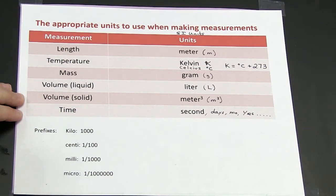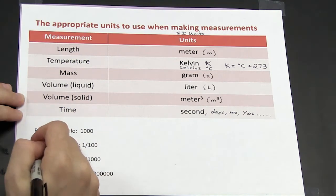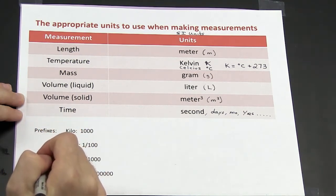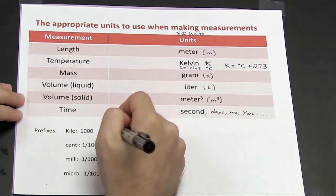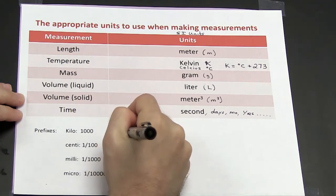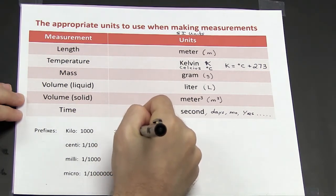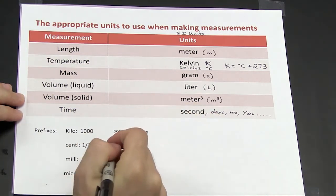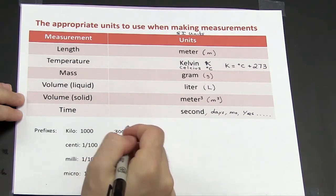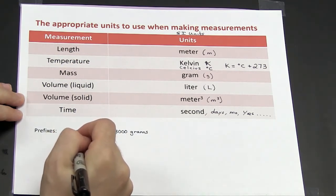For measurements that are either really big or really small, we can attach prefixes to those measurements. So for example, if I had 3000 grams, instead of writing 3000 grams, I can attach a prefix to the grams.